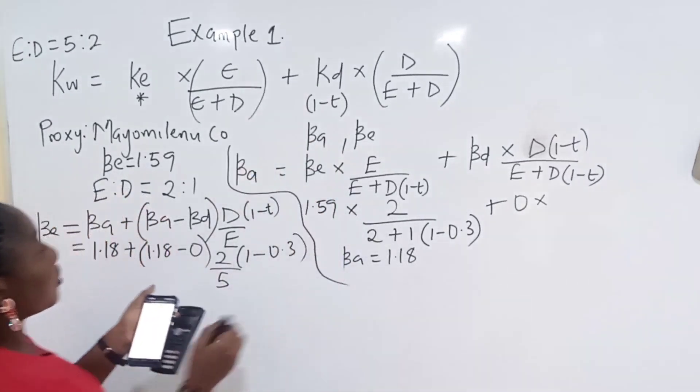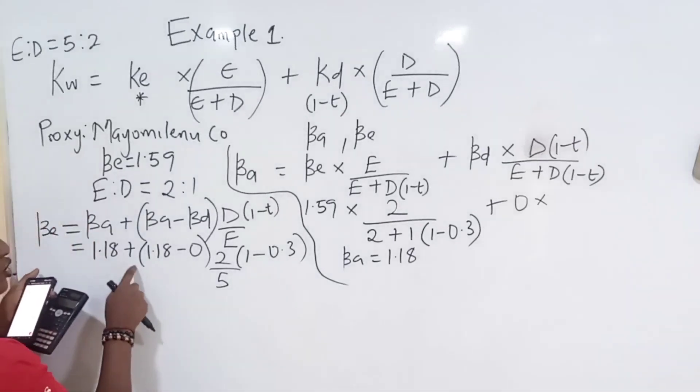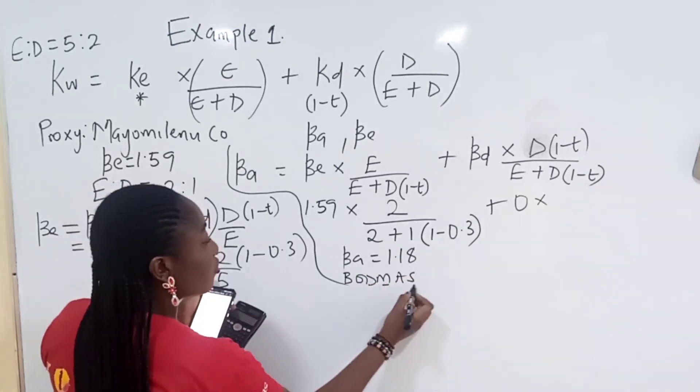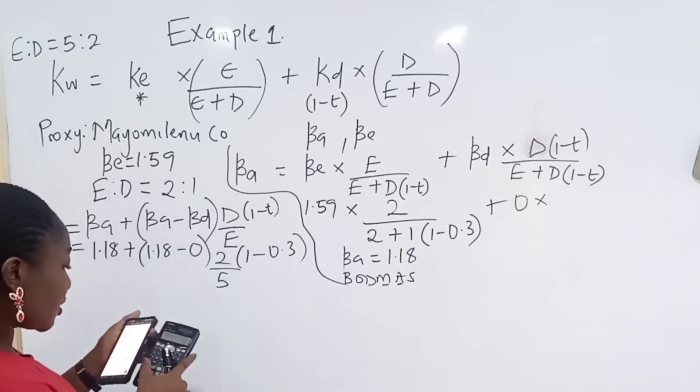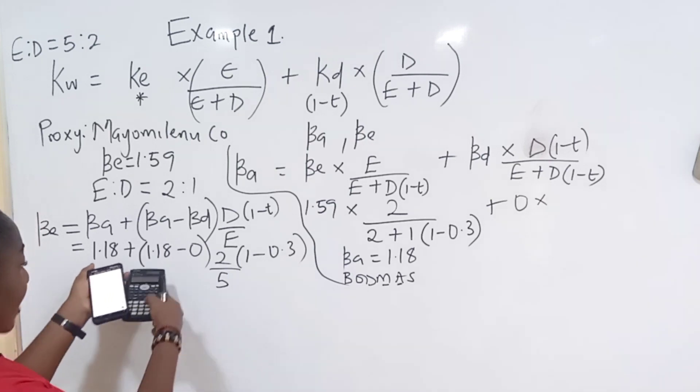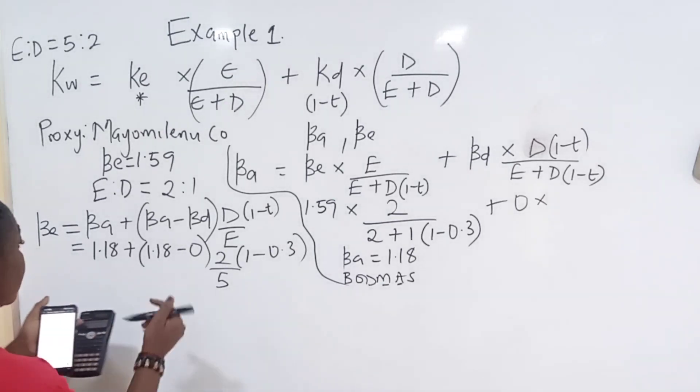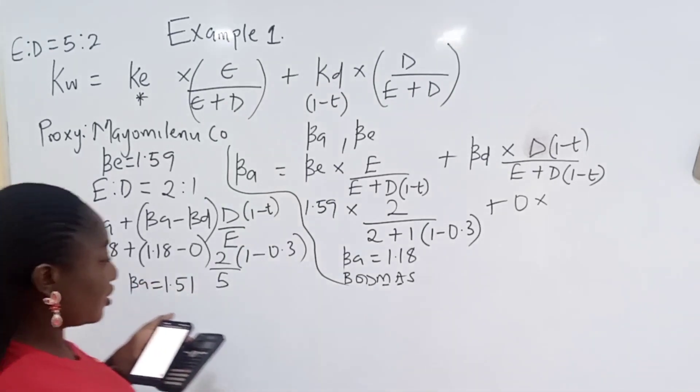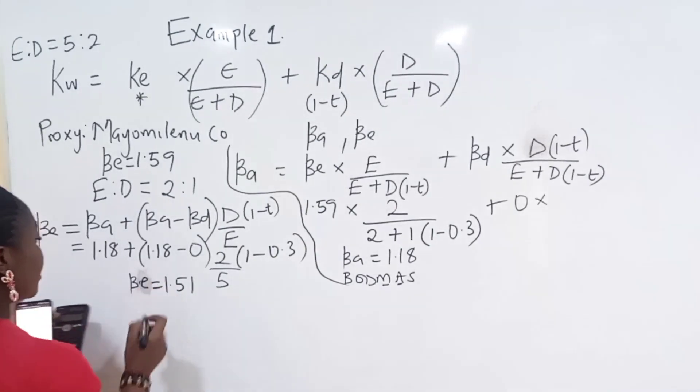Then you solve. Let me separate this so you don't get confused. Then you solve. So one reason is that all these ones, the multiplication, you dismantle first. Because in BODMAS, multiplication comes before addition. So you do multiplication first, then you add it to 1.18. So here, is what? 2 times 0.7 divided by 5 times 1.18 plus 1.18. That gives you BE equals 1.51. Sorry. BE equals 1.51.